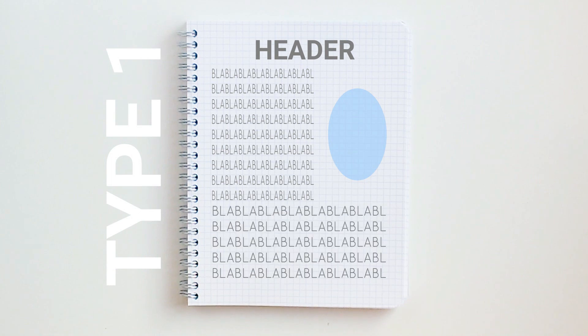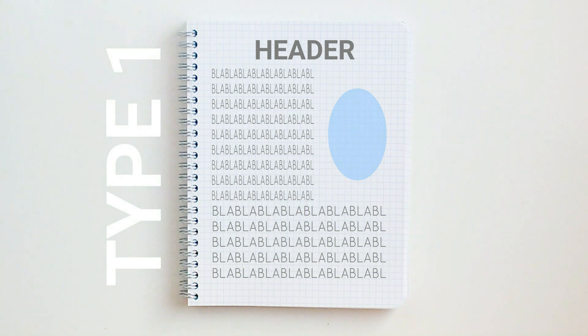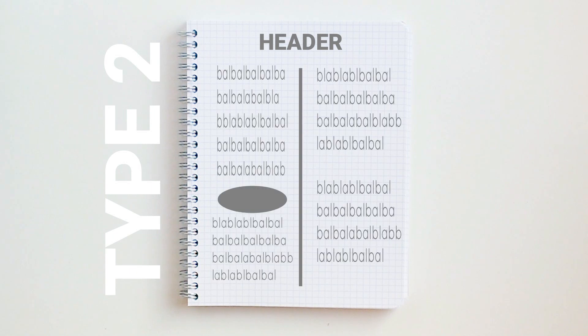The first type of note-taking is when I use the full page — I write the title, then the text, and then the diagram. The diagram is the most important part because visual learning works much better for me than just writing. The second type is where I divide the page into two columns, which I generally use when working on geography comparing two different countries.